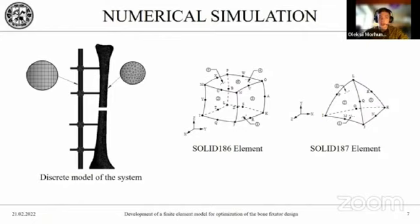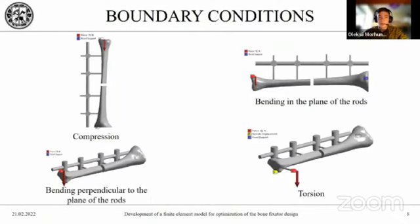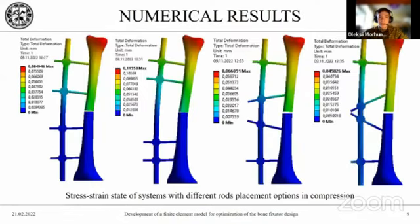After setting the boundary conditions for the discrete models, for all types of load we apply a force of 10 N, a fixed support, and in the case of torsion, a remote displacement. Since we are interested in the displacement of points of the system, in the solution section we choose total deformation, which shows the displacement of nodes of the discrete model. After starting the calculation, we receive the desired displacement results.